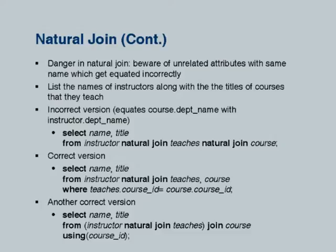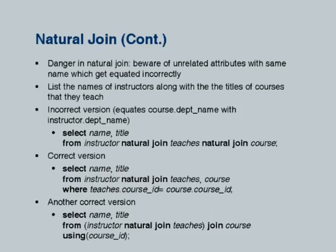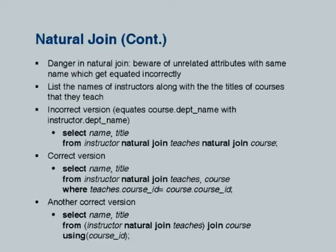To do this correctly, you can avoid natural join entirely and explicitly list all join conditions. Alternatively, you can do a natural join of instructor and teaches — where the only common attribute is id, so it is safe — and then use a cross product with course along with a WHERE clause condition specifying matching only on course_id, not department_name. This gives the correct result unlike the incorrect natural join query.